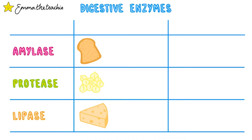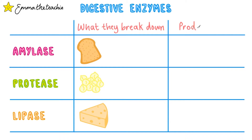In the digestive system video you heard the names of three digestive enzymes. Today we're going to look at what they break down and the products of this breakdown. So let's take a look at the names of them.